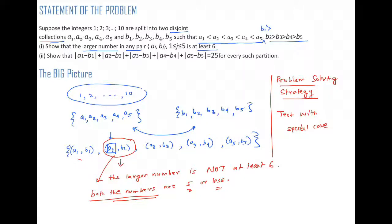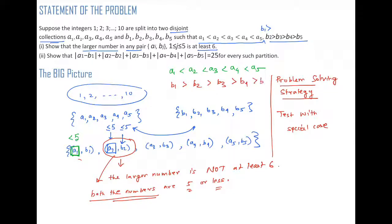Since a2 ≤ 5 and the sequence a1 < a2 < a3 < a4 < a5 is increasing, clearly a1 is also less than 5. Since b2 ≤ 5 and b1 > b2 > b3 > b4 > b5 is decreasing, all numbers after b2 — namely b3, b4, and b5 — are also less than 5.